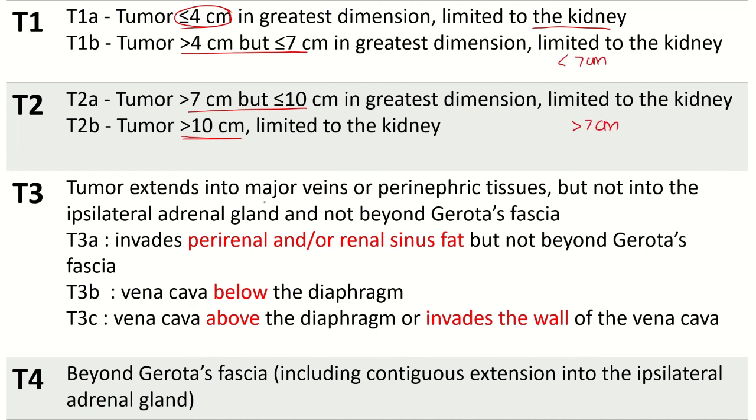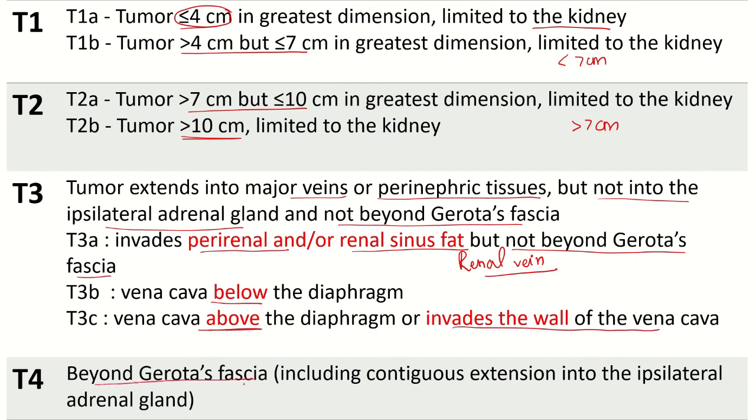T3 is invasion into major veins or perinephric tissues but not to the ipsilateral gland or not beyond Gerota's fascia. T3a, the tumor invades into the perirenal or renal sinus fat but not beyond the Gerota's fascia and it also involves renal vein. T3b is IVC below diaphragm. T3c is IVC above diaphragm, that is into the chest, and invasion of the wall of the vena cava. T4 is beyond Gerota's fascia.